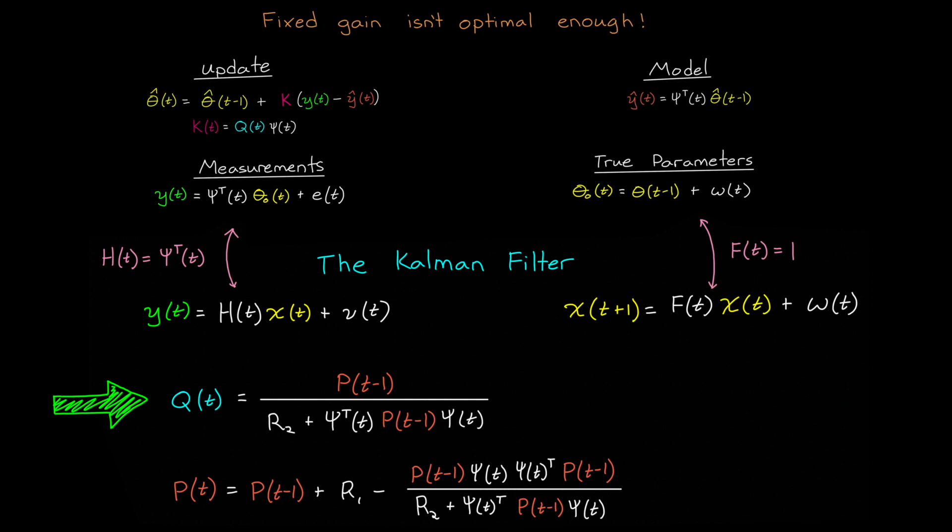Note that even though this is significantly more complex than a fixed gain approach, it's still something we can solve for using a relatively small number of matrix operations, which is blazing fast compared to the more iterative optimization methods that we used in offline system identification. This is why recursive approaches like this are so well suited for real-time operations. Over time, one sample at a time, this will converge on the optimal model parameters.